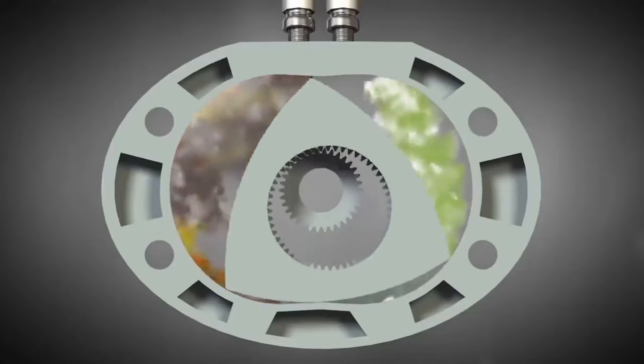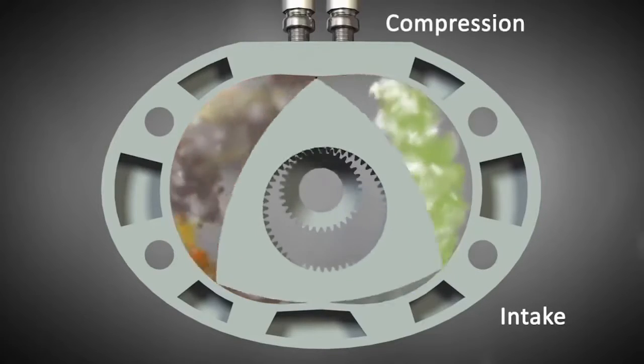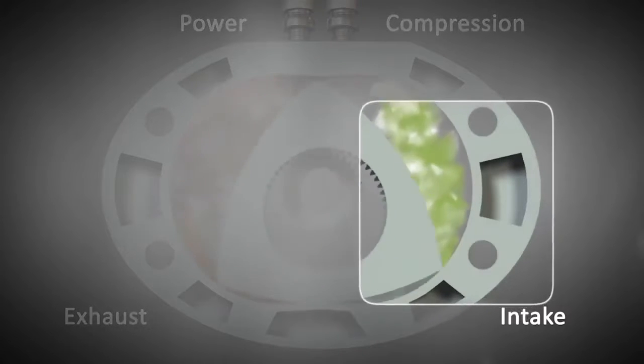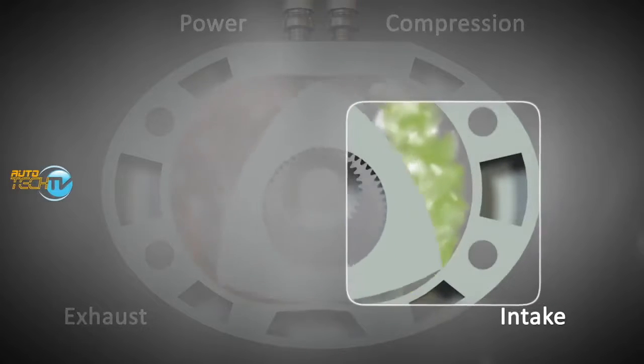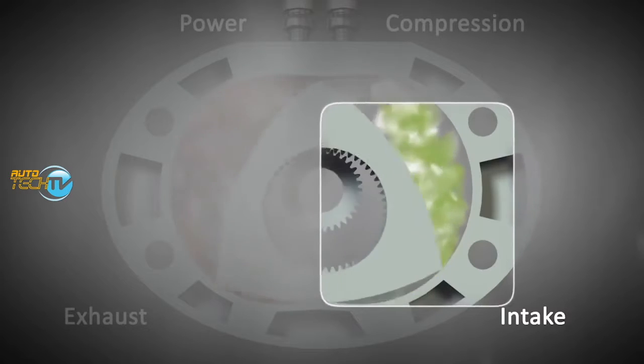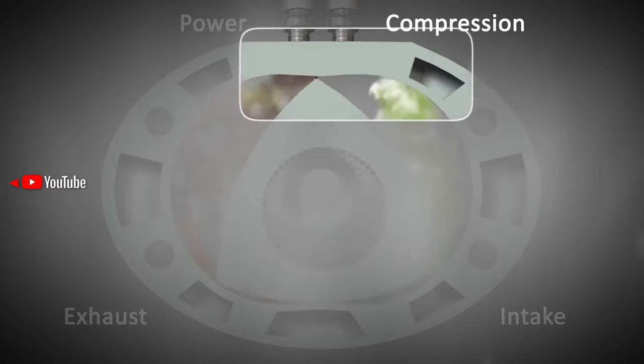Now imagine the rotor as a mischievous chef in a kitchen. As it spins, it visits three separate chambers, each one representing a different course in a gourmet meal. First, it gracefully invites a mixture of fuel and air into the chamber like adding ingredients into a pot. Then with the flick of a wrist, it compresses this mixture, squeezing it tighter than your pants after Thanksgiving dinner.